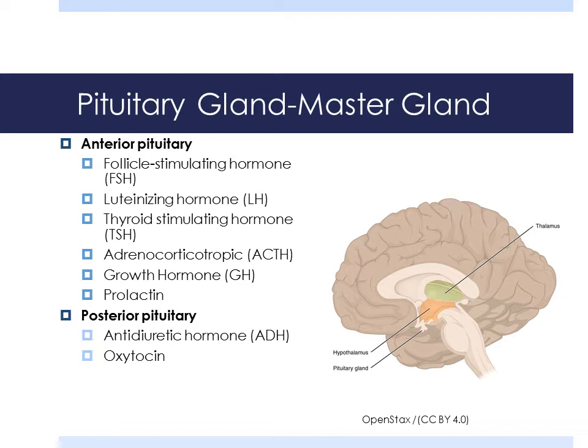The hormones of the anterior pituitary are: FSH, which stimulates sperm and egg production; LH, which stimulates release of the egg; TSH, which regulates the release of thyroid hormones; ACTH, which regulates the release of epinephrine and glucocorticoids from the adrenals; GH or growth hormone, which stimulates growth; and prolactin, which stimulates milk production. In the posterior pituitary, we have ADH which conserves fluid, and oxytocin which contracts the uterus.